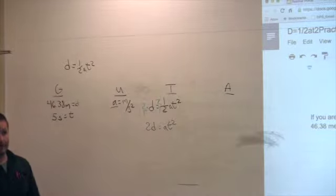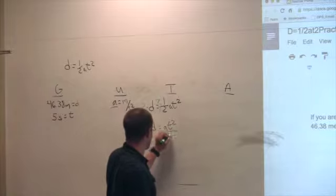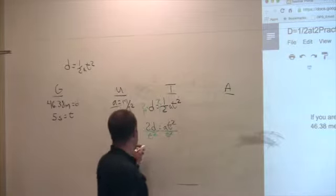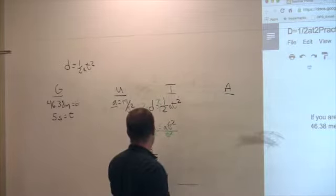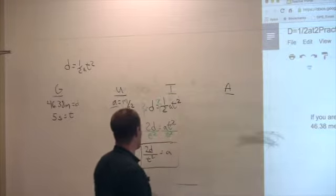Now, what do I do? Divide by T squared. Divide by T squared, right? I do one side, I do the other side mathematics. These are going to cancel. That's going to leave me with two D over T squared equals A. That's the tool I'm going to use.